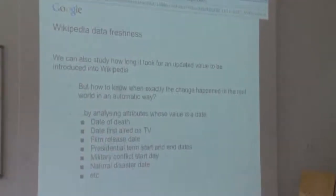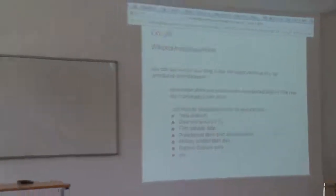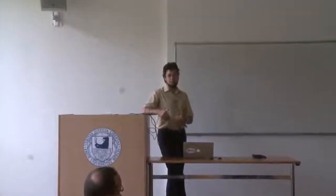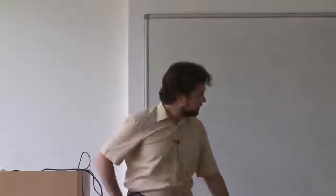Another question we asked ourselves is how fresh is this data — when something changes, how long does it take for people to update it in Wikipedia? To study this in a fully automatic way, we analyzed attributes whose value is a date — things like date of death of a person, date of first airing for a TV show, film release dates. If the attribute value is a date, we know exactly when that value started being valid and can measure how long it took for it to be added to Wikipedia.